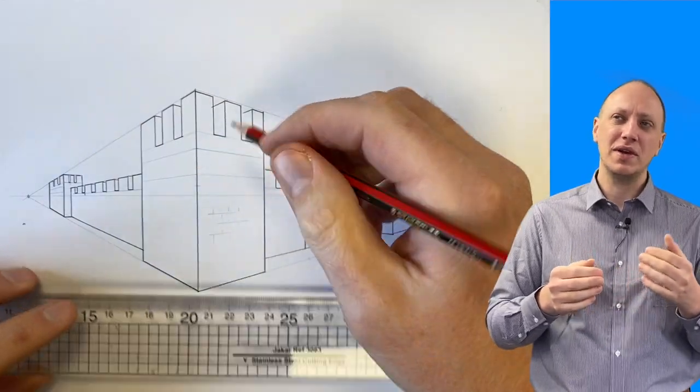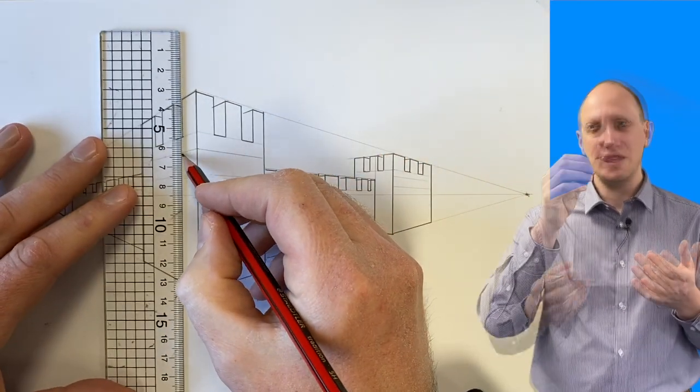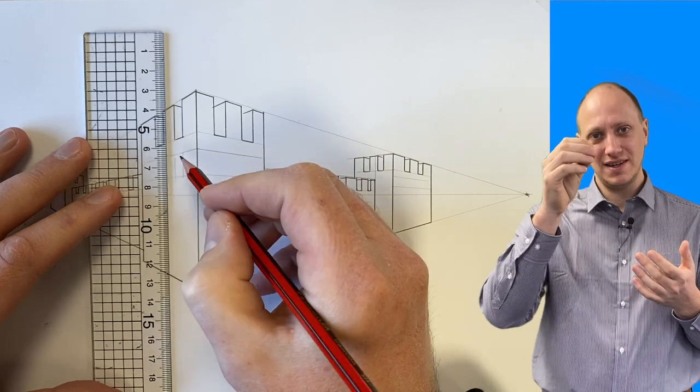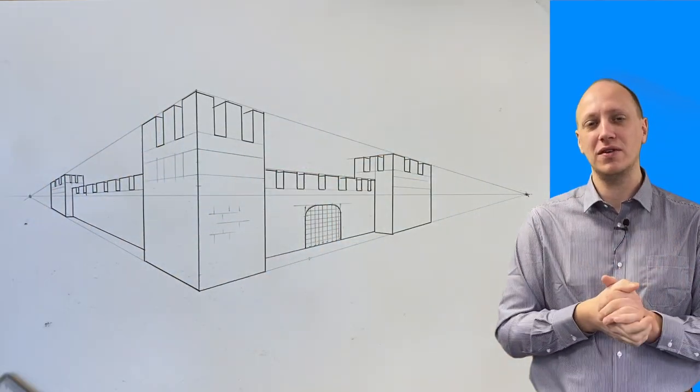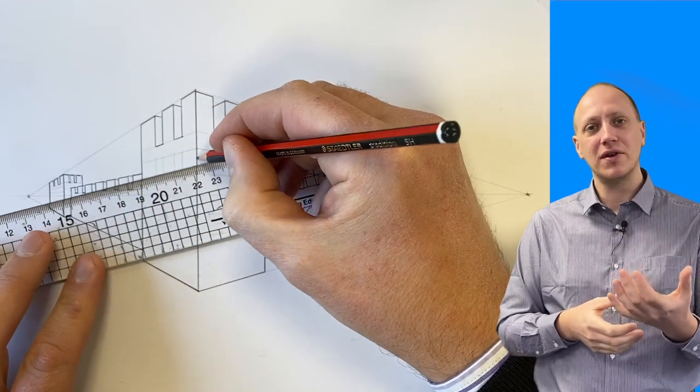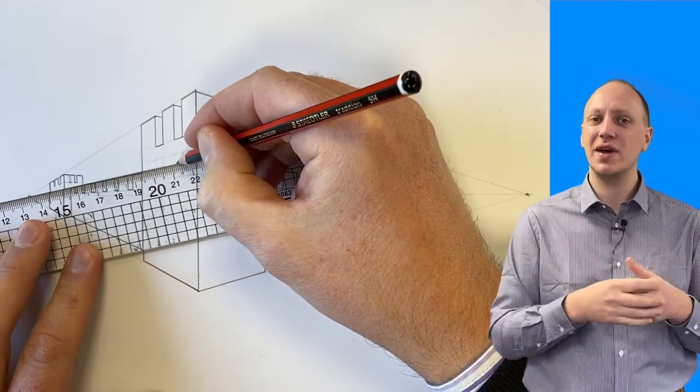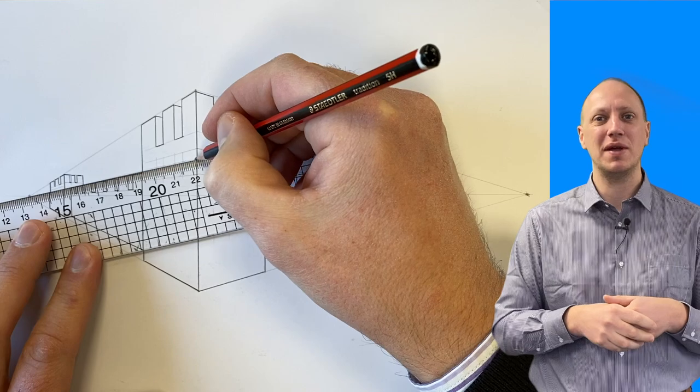Once we've done that, we can then decide how thick or thin we want them to be, and I recommend you do this with some light lines on your drawing just to see what it's going to look like before you start putting your ruler there. You'll find that the ruler stops you seeing things, so I like to do this with some light lines with my pencil first.